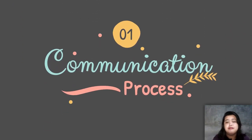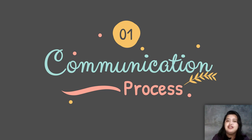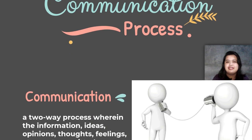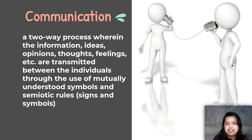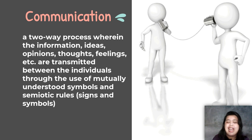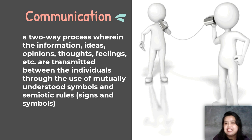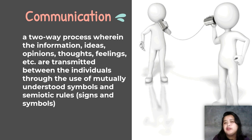Let's start with our communication process. First, let's identify what communication is. Communication is a two-way process wherein information, ideas, opinions, thoughts, and feelings are transmitted between individuals through the use of mutually understood symbols and semiotic rules — signs and symbols. It involves several components such as the sender, the actual message being sent, the encoding of the message, the receiver, and the decoding of the message.